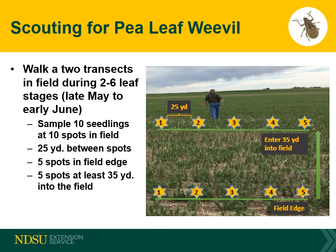Scouting should occur when the crops have just emerged in the spring, especially when weevil populations are high. Look for the half-moon leaf notches on the lowest leaves of the plant along the field edge first. To establish an average, sample 10 seedlings per site at 10 sampling sites in the field — five near the field edge and five about 35 yards into the field, spaced about 25 yards apart.